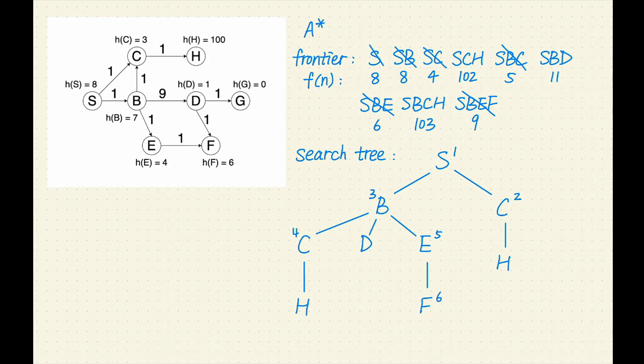Next, SBD has the lowest F value of 11. Let's remove SBD from the frontier. D is not a goal, let's expand it. D has two successors, F and H. Let's add SBDF and SBDG to the frontier. Their F values are 17 and 11.